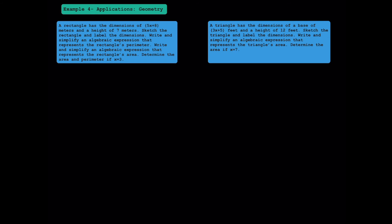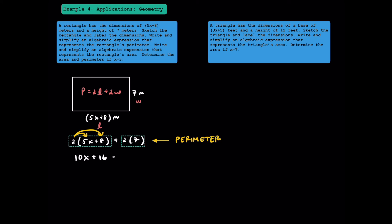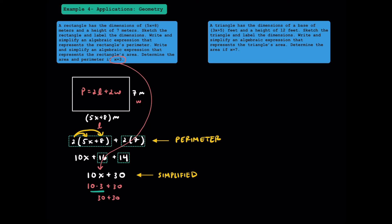Now let's try a couple of geometry applications. For this first rectangle, to find the perimeter we use 2 times the length plus 2 times the width. With a length of 5x plus 8 and a width of 7, we write 2 times the quantity 5x plus 8 plus 2 times 7. Distributing gives us 10x plus 16, and 2 times 7 gives 14. Combining the constants 16 and 14 gives 30, so our simplified expression is 10x plus 30. Substituting x equals 3: 10 times 3 plus 30 gives a perimeter of 60 meters.